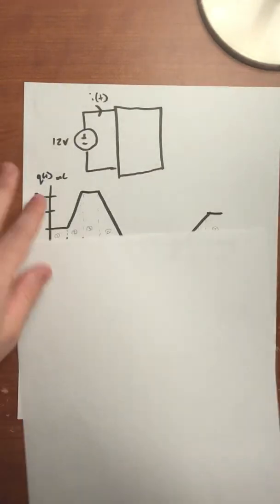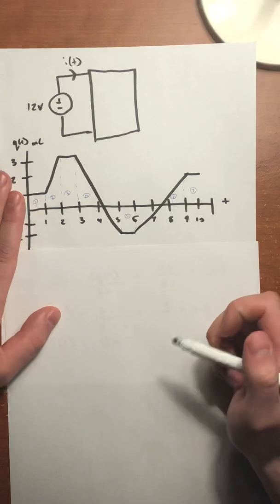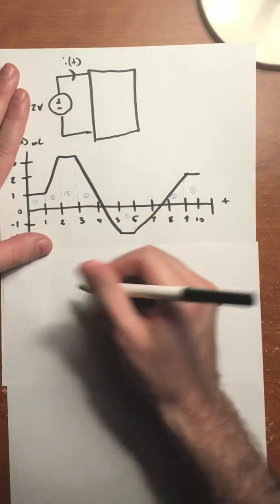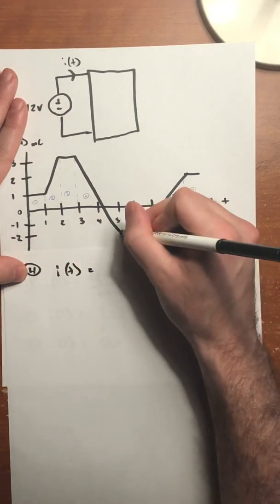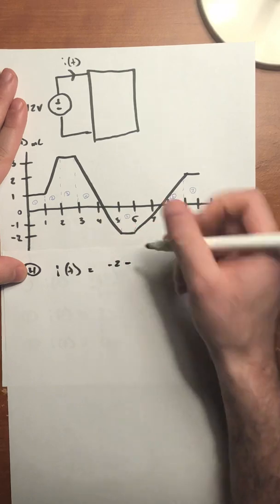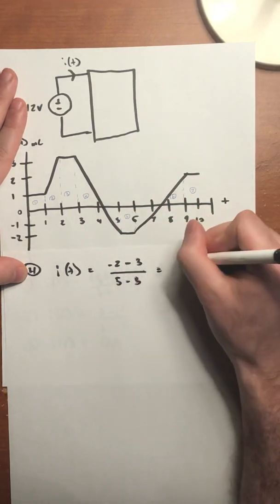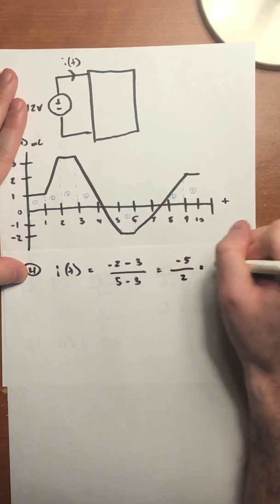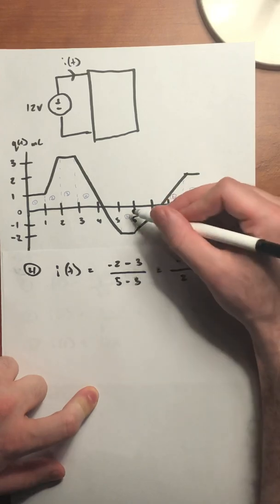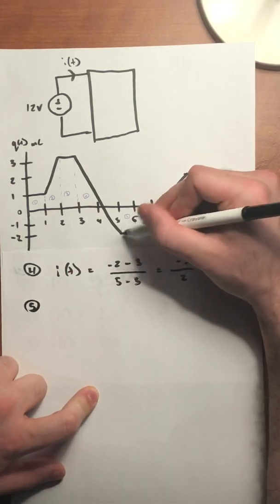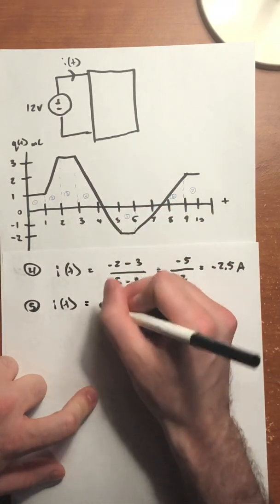For section 4, the charge is decreasing from 3 milliseconds to 5 milliseconds. The current is equal to the change in charge: the final value is negative 2 minus the initial value of 3, divided by the change in time (5 minus 3). That gives us negative 5 divided by 2, which is negative 2.5 amps. For section 5, between 5 and 6 milliseconds, there's no change, so the current is 0 amps.